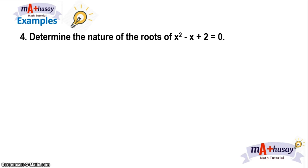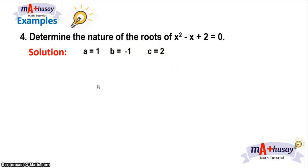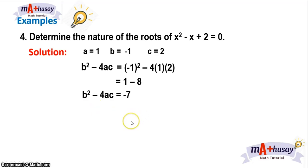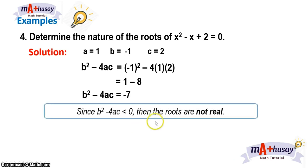Let's take the last example. Determine the nature of the roots of x² − x + 2 = 0. We identify a = 1, b = −1, and c = 2. Using the discriminant b² − 4ac and substituting, we have (−1)² − 4(1)(2) = 1 − 8 = −7. The discriminant equals −7. If the discriminant is less than zero, then the nature of the roots is not real.